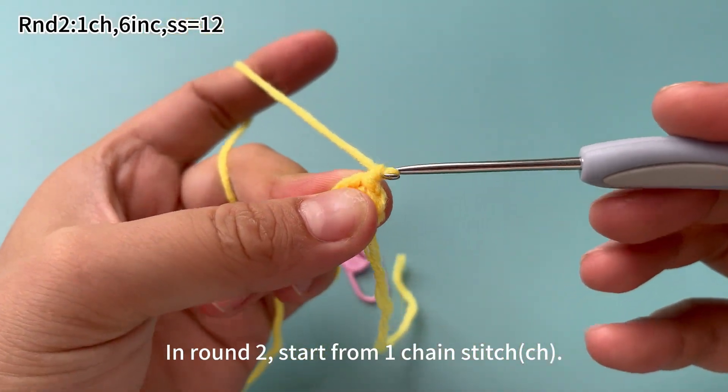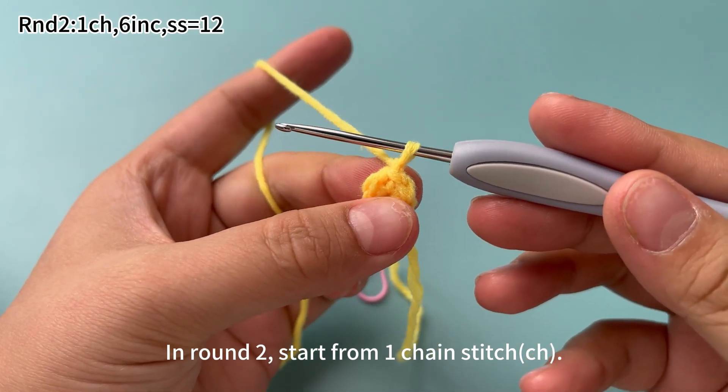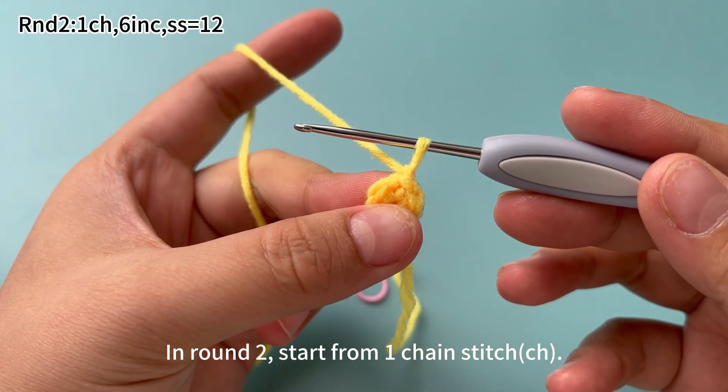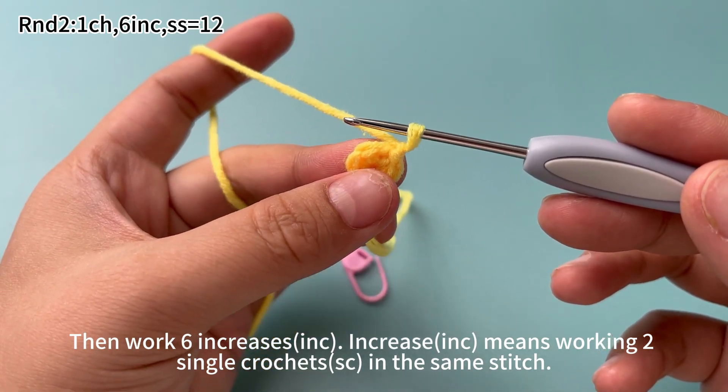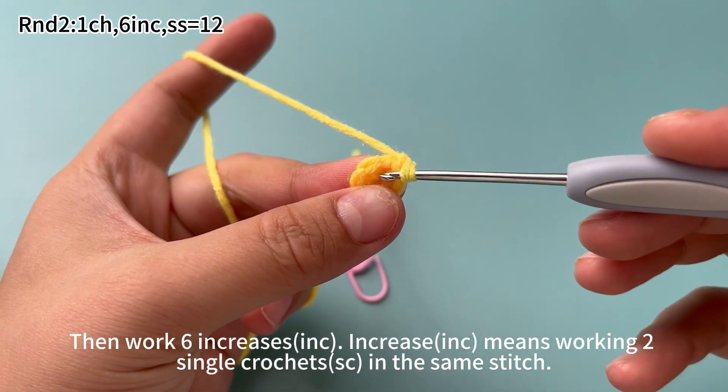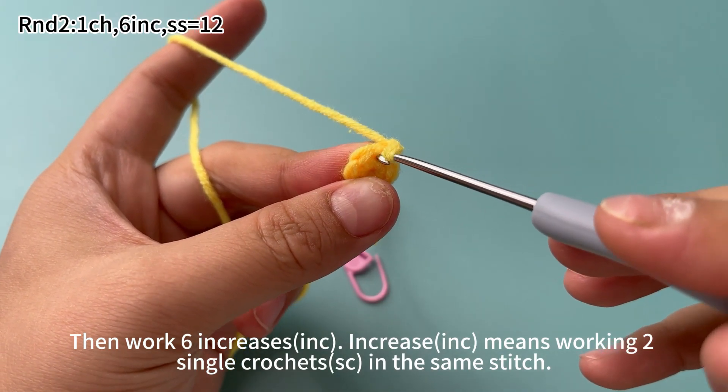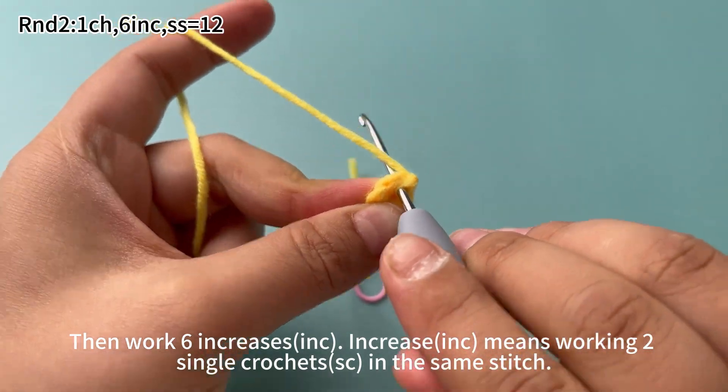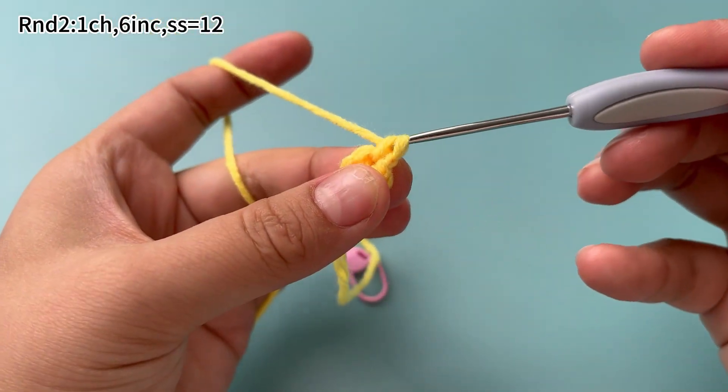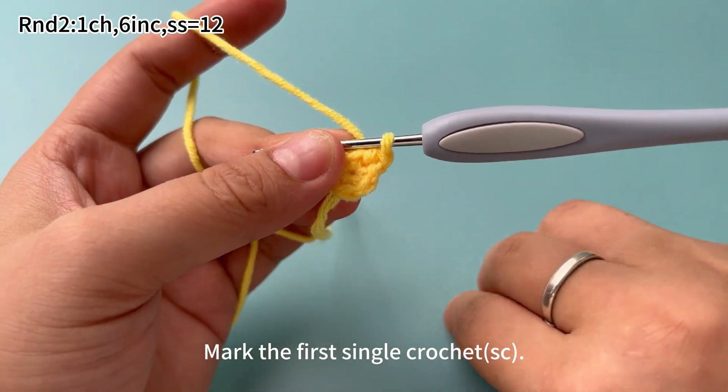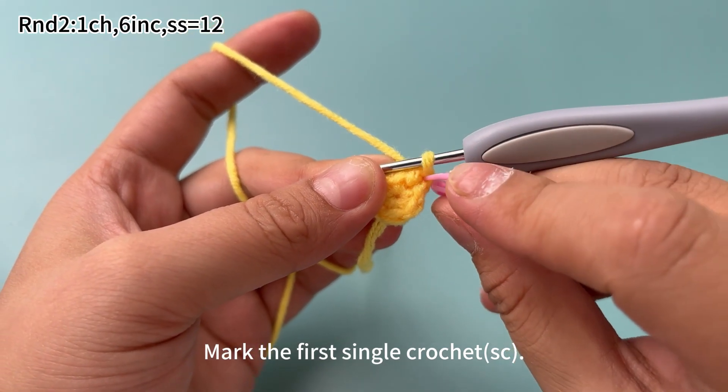In round 2, start from one chain stitch. Then work 6 increases. Increase means working 2 single crochets in the same stitch. Mark the first single crochets.